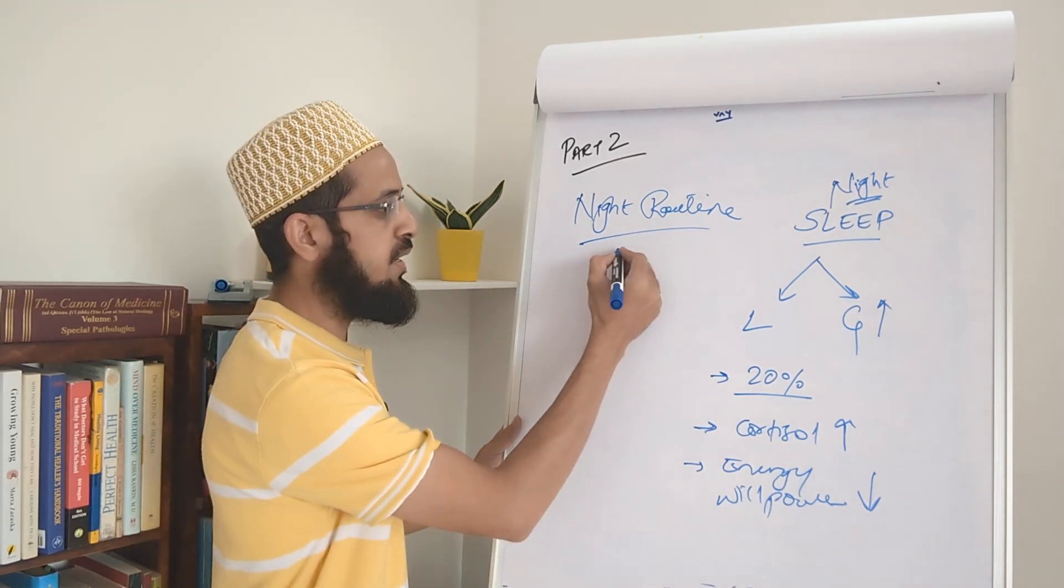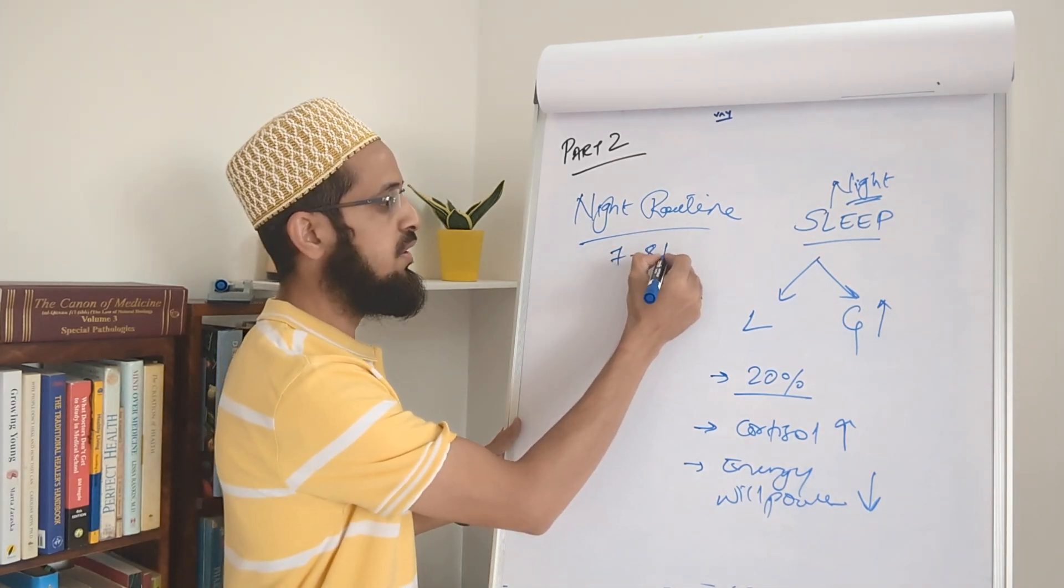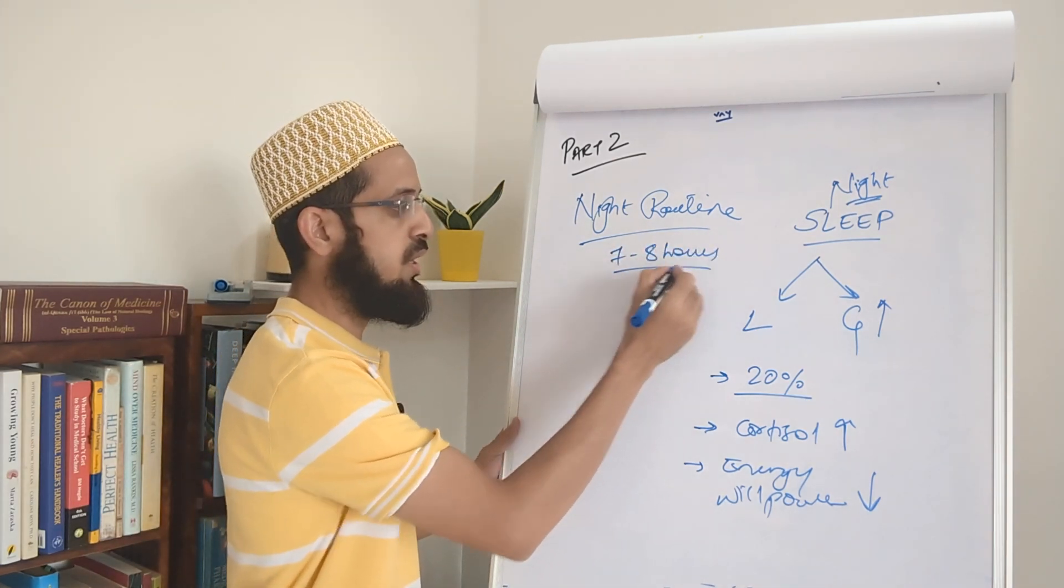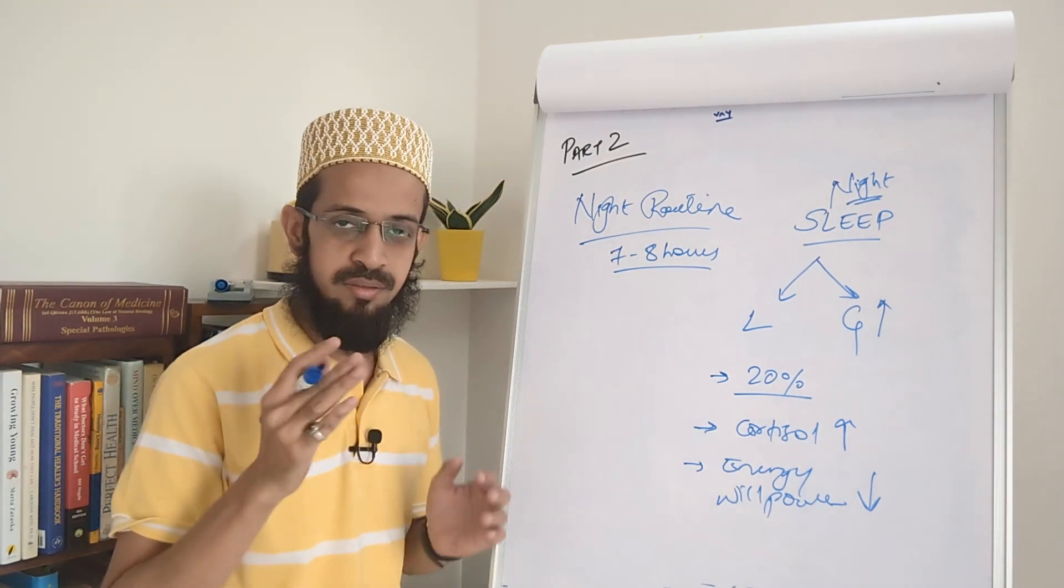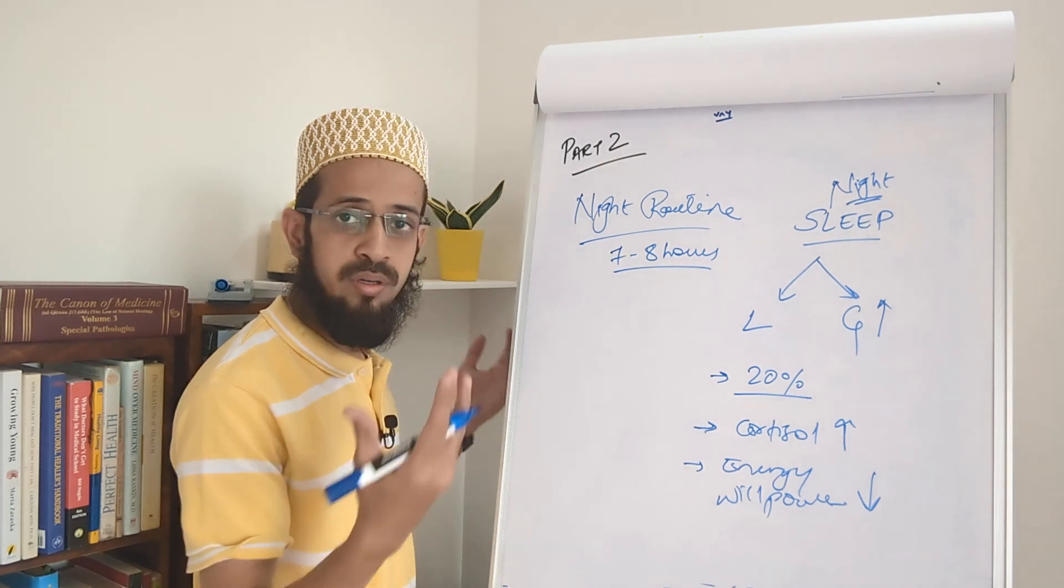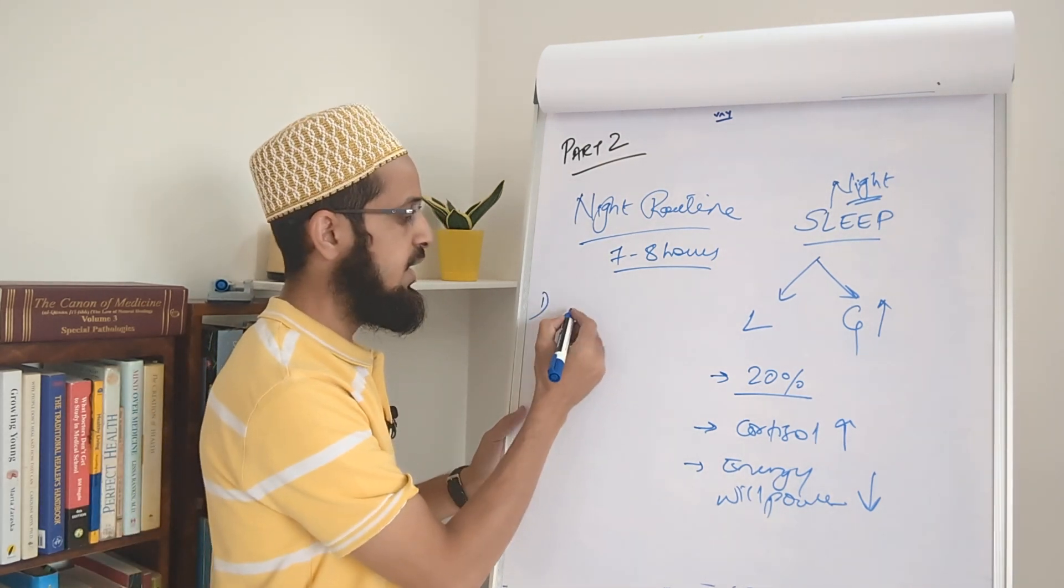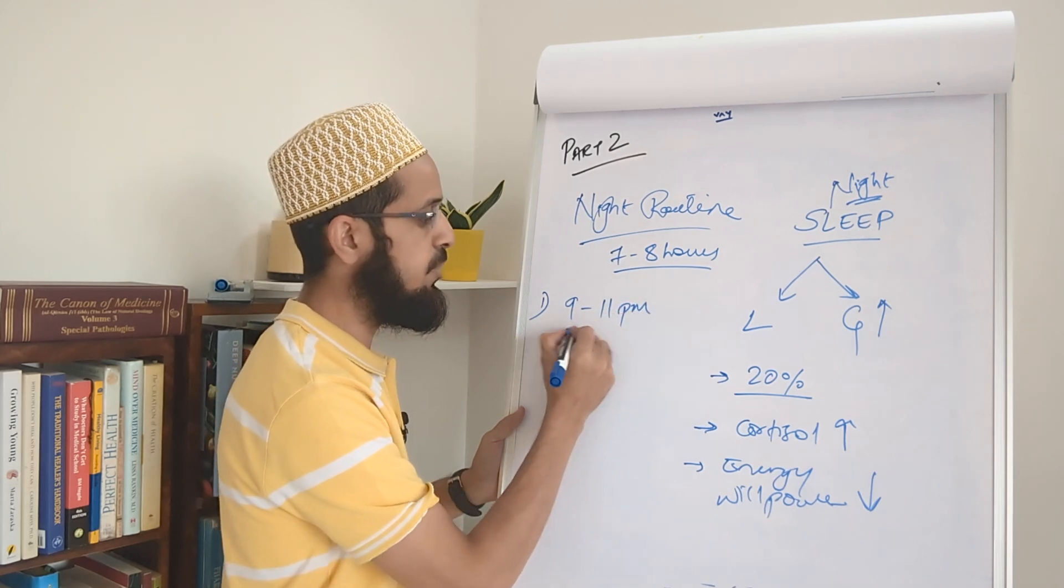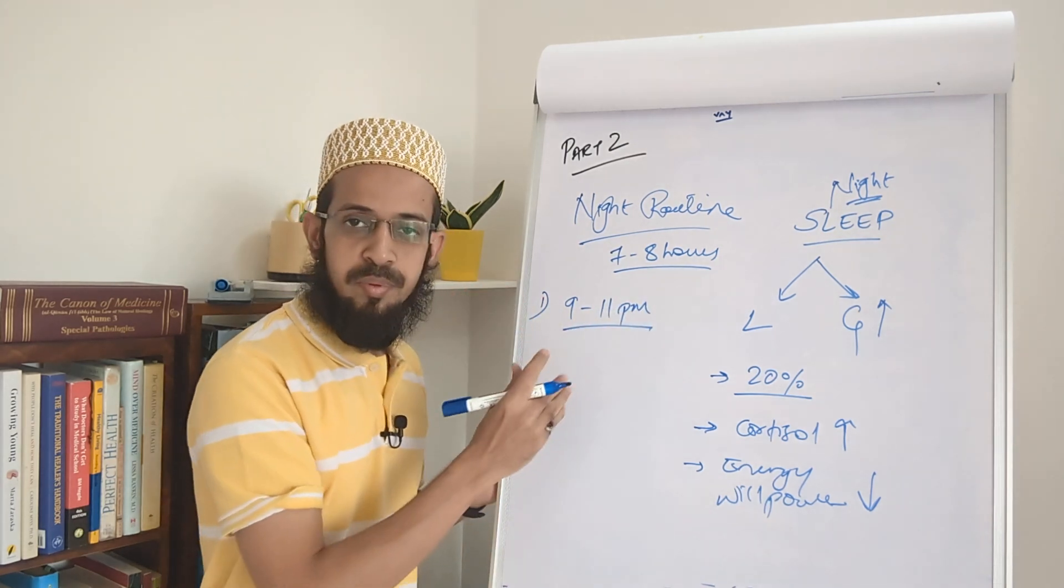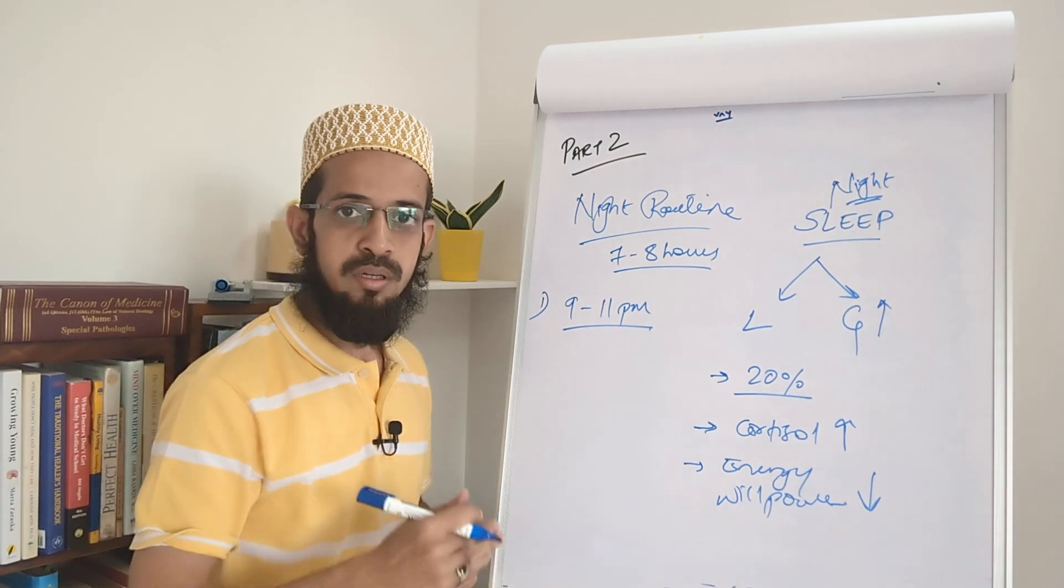So start first with your night routine. The adequate amount of time would be anywhere between 7 to 8 hours of sleep. So 8 hours would be the ideal time but nothing less than 7 hours. Now what time do you have to sleep? You have to sleep at night which is anywhere between 9 p.m. to 11 p.m. 11 p.m. is on a higher side. Earlier the better.